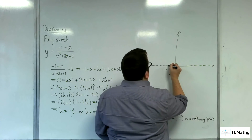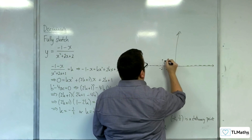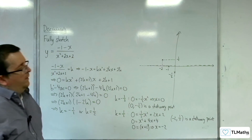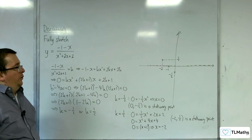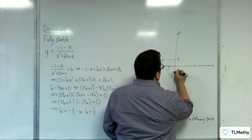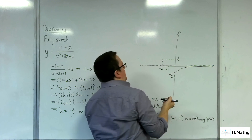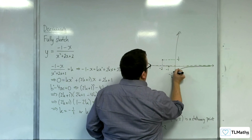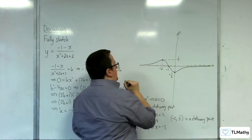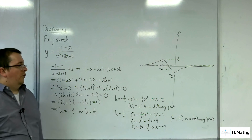So we've got the stationary point at (minus 2, 1 half) somewhere up here, and (0, minus 1 half) as well. The curve has to approach the x-axis, so it comes around there tending towards the x-axis in that direction, then comes through the stationary point, and approaches the x-axis from the other direction. That must be the shape of the curve.